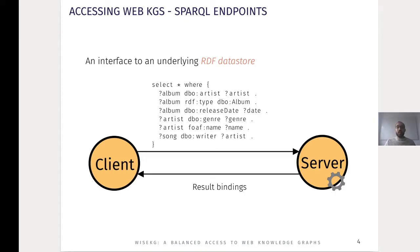One of the most common ways to enable querying the knowledge graphs published on the web is using SPARQL endpoints. A SPARQL endpoint is an interface to an underlying RDF data store where the client sends the server a SPARQL query, and then the server executes this query over the RDF data store and responds to the client with the results binding.